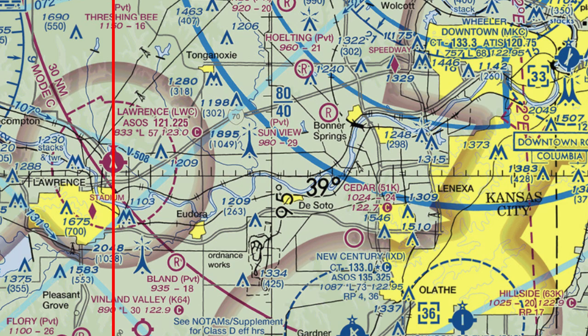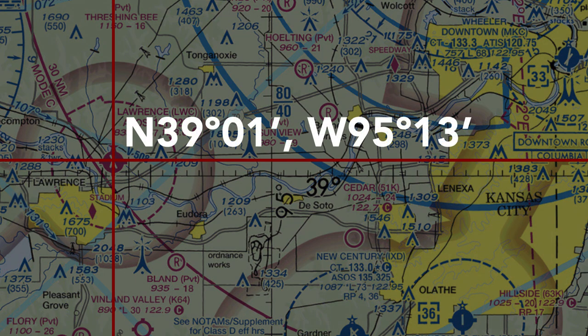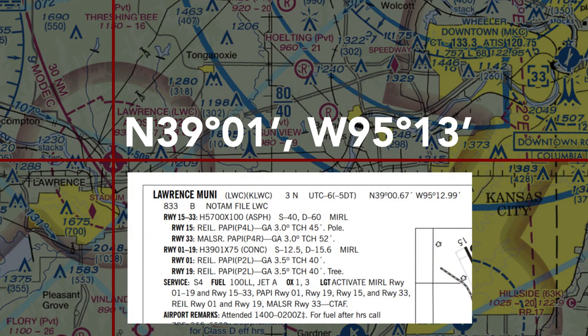All we have to do is determine its latitude, and we've got it pinpointed on the surface. Count up one minute of latitude from the 39-minute line, and we see it's at 39 degrees, one minute north. The coordinates for the airport are 39 degrees, one minute north, and 95 degrees, 13 minutes west. We can confirm this by looking at the AFD info in the Chart Supplement publication. They have further divided the minutes into tenths of minutes, but you can see that it's basically the same thing.